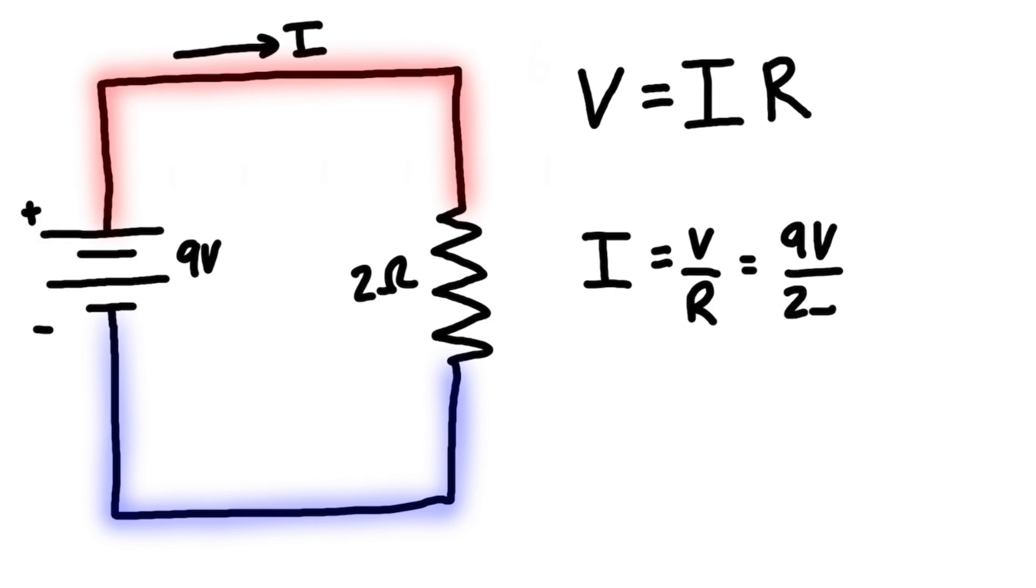The unit of voltage is volts, the unit of current is amps, and the unit of resistance is ohms. Volts divided by ohms gives us amps, so the current in the circuit is 4.5 amps. Now let's change a value in the circuit.